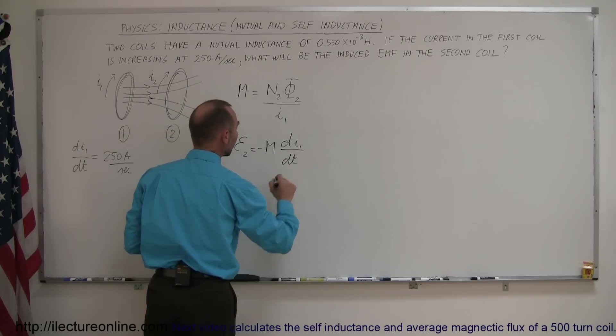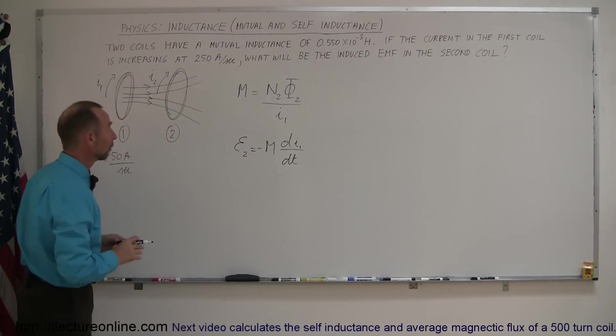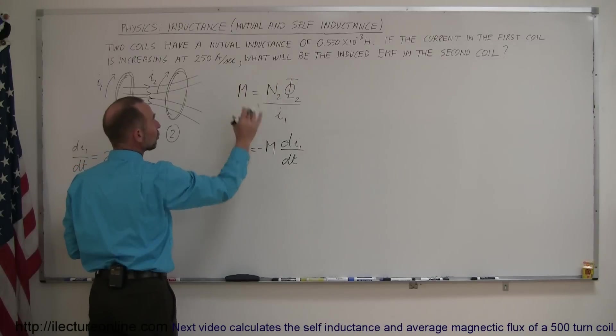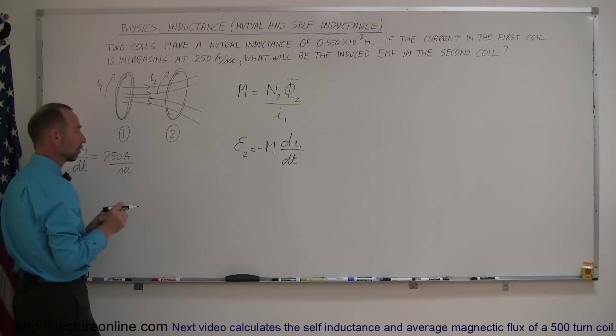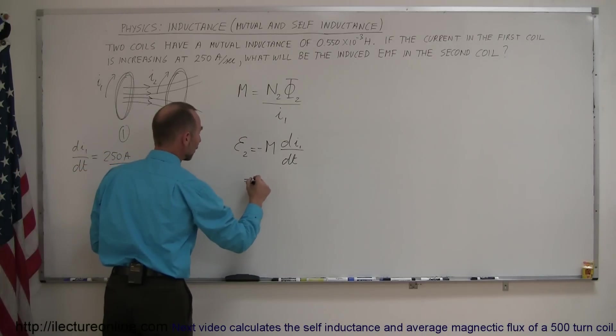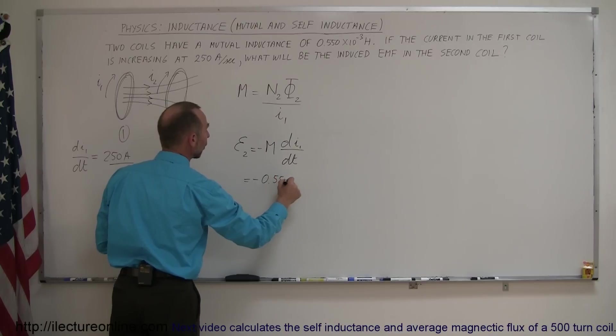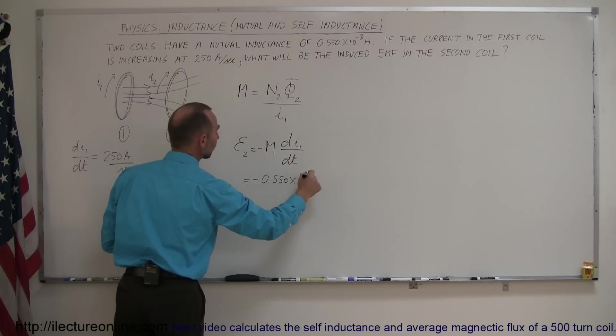So, that's dI1/dt. So, since we're already, we're given the mutual inductance, and we're also given the rate of change of the current in coil number 1 as a function of time, we can say that this is equal to minus the mutual inductance of 0.550 times 10 to the minus 3 Henry's.